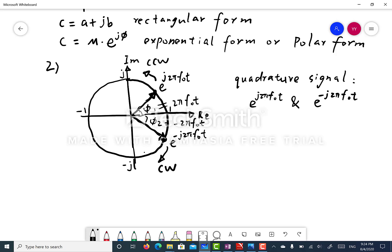The key here is that for e to the j 2 pi f0 t, when t increases, this quadrature signal rotates in the counter-clockwise direction.